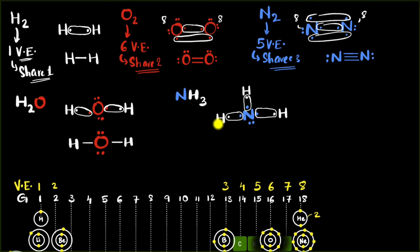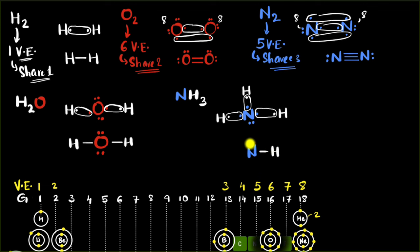We can verify: each hydrogen has access to two electrons, and nitrogen has access to eight electrons — octet rule satisfied. The final structure is N with three single bonds to H, and do not forget the lone pair on nitrogen.